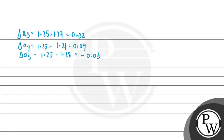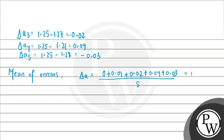Now we will find out the mean of the errors, which we represent as delta A. This will be the summation of all the error values, which is 0 plus 0.01 plus 0.02 plus 0.04 plus 0.03 divided by the total number of error values, that is 5. Solving this gives us 0.05.